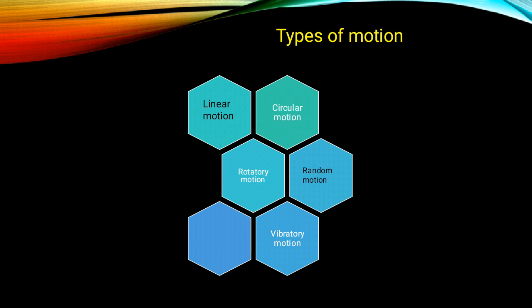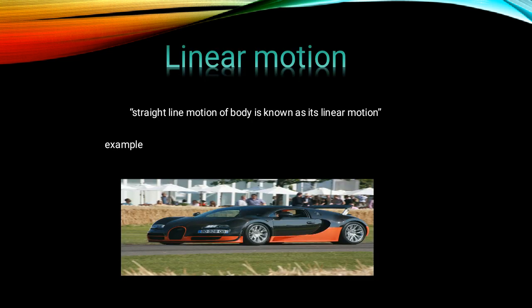The types are: linear motion, circular motion, random motion, rotatory motion, and vibratory motion. Linear motion: the straight line motion of a body is known as linear motion. We come across many objects which are moving in a straight line. For example, a car moving on a straight and level road is in linear motion.